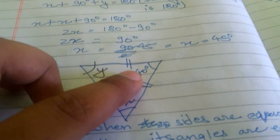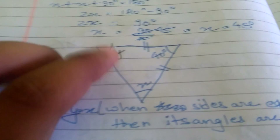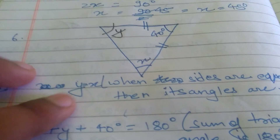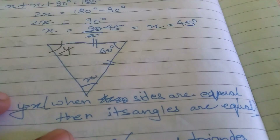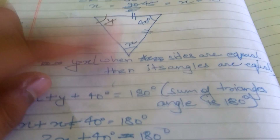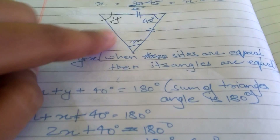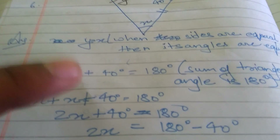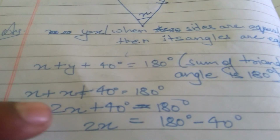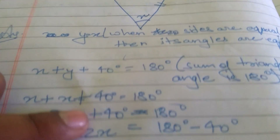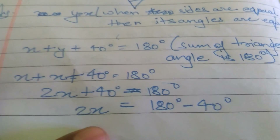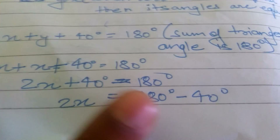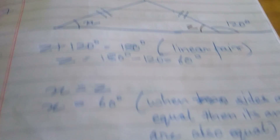Here is X. I take Y as additional. Y is equal to X because when sides are equal, their angles are also equal. Y is X, this is X, and this is 40. We know the sum of a triangle's angles is 180 degrees. So Y plus X plus 40 equals 180, which gives X plus X plus 40 equals 180, then 2X plus 40 equals 180. So 2X equals 180 minus 40, and X equals 70 degrees.